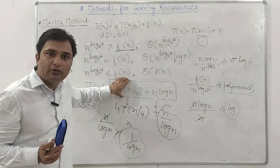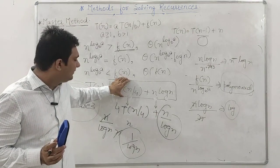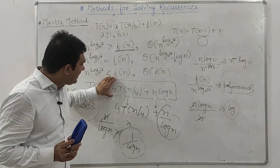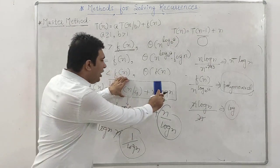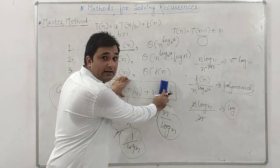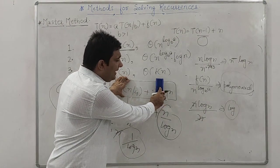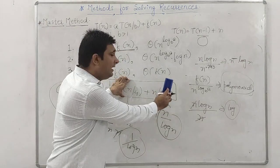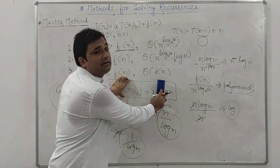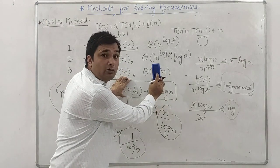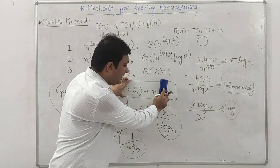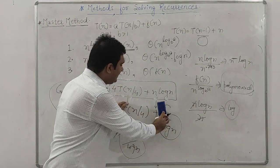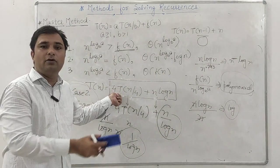To recap: the example T(n) = 3T(n/4) + n log n is an example for Case 3 where the regularity condition holds. If f(n) has a polynomial term combined with a logarithmic term and the polynomial factor survives after dividing by n^(log_b(a)), the master method works. If we have 3T(n/4) or 2T(n/4), it solves to Theta(n log n). But 5T(n/4) onward, the regularity condition fails.